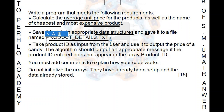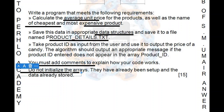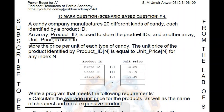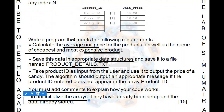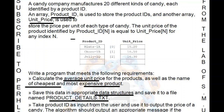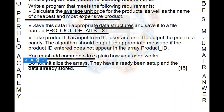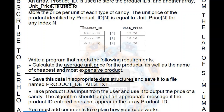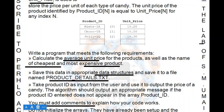Once the product ID is found, use the index number to print the unit price from the unit_price array. If the entered product ID is not found, an error message should be displayed. Always add comments — you cannot write a good solution for a 15-mark question without comments. Do not initialize the arrays; if the question says they have already been set up with data stored, do not declare them, otherwise you lose two or three marks — this is not just ignoring an instruction, it is a blunder.